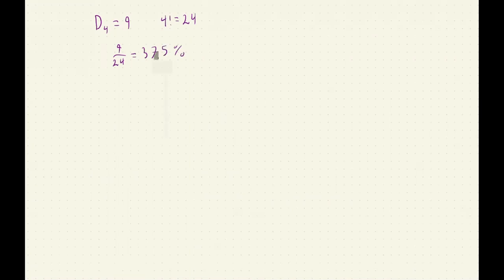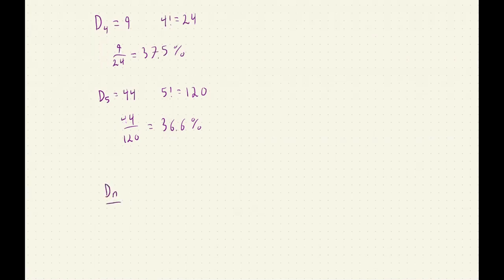So, what happens as n gets larger? Well, let's first look at the case where n is equal to 5. D sub 5 is equal to 44. 5 factorial is going to be 120. And 44 out of 120 is going to be 36.6%. As it turns out, as we get larger, in general, D sub n over n factorial tends towards 36.78%, and this is equal to 1 over e.